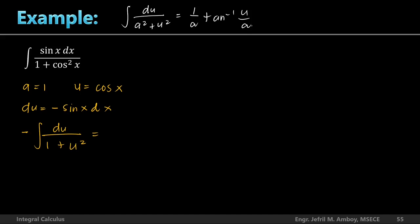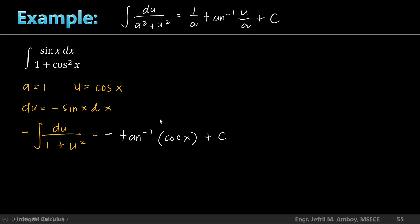Applying the formula with a = 1, the result is −1 times tan⁻¹(cos(x)/1) plus C, which simplifies to −tan⁻¹(cos x) plus C. We used U-substitution and obtained the inverse tangent of cosine x as our answer.